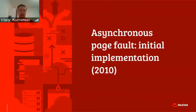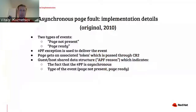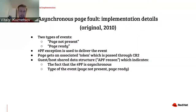Today we are mostly going to talk about the first idea, which is called asynchronous page fault. Initially it was implemented in 2010. The main concept is that there are two events: the first is called page not present, and the other is called page ready. To deliver these events to the guest, a page fault exception is used. With every page that was not available, there is a token associated, and this token gets passed through the CR2 register. There is also a shared memory structure — the asynchronous page fault reason — which indicates that the injected page fault is an async page fault and not a normal one, and tells us which event was delivered.